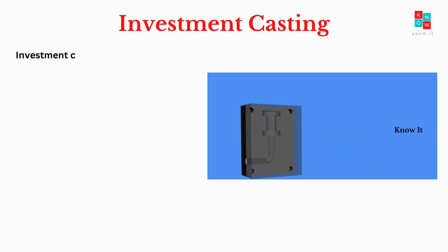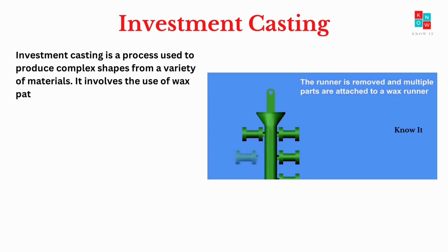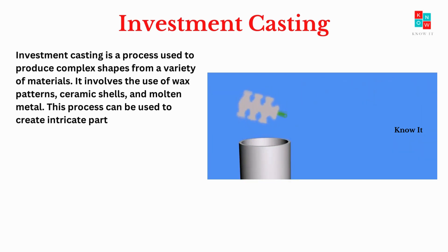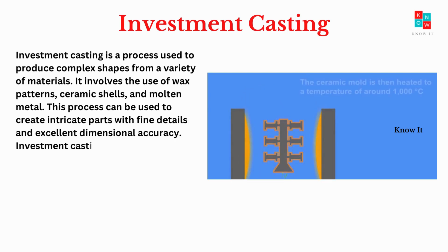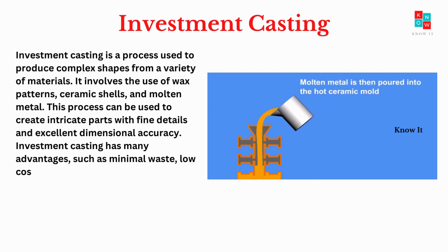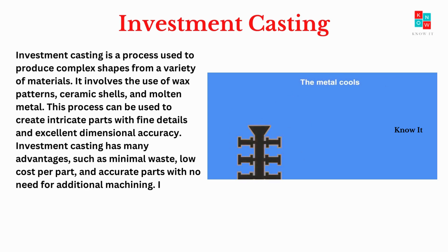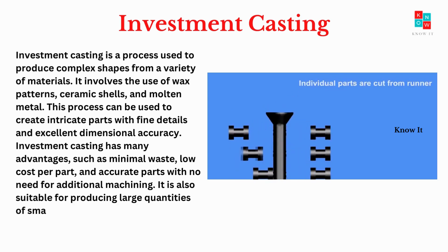Investment casting is a process used to produce complex shapes from a variety of materials. It involves the use of wax patterns, ceramic shells, and molten metal. This process can be used to create intricate parts with fine details and excellent dimensional accuracy. Investment casting has many advantages, such as minimal waste, low cost per part, and accurate parts with no need for additional machining. It is also suitable for producing large quantities of small parts.